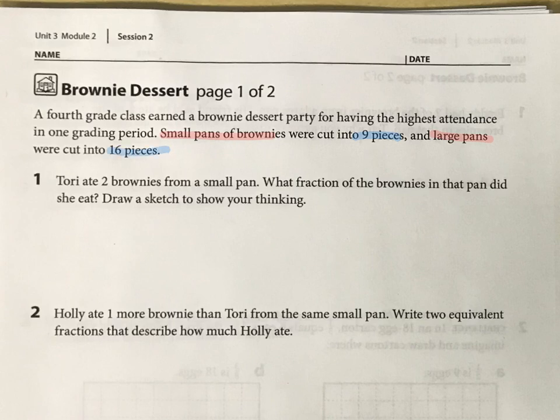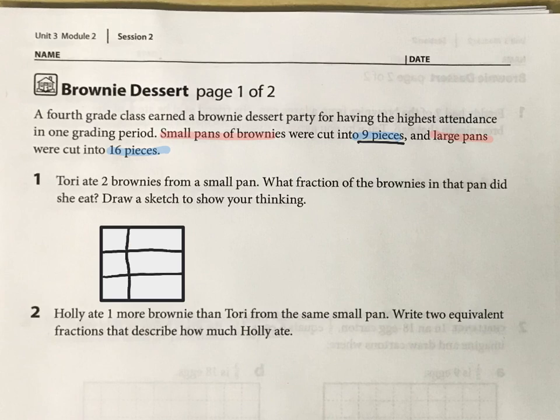So we're starting with Tori and she's getting this from the small pan. Squares are going to work best for this. We have nine pieces, right? Rectangles could work too, but basically the way to do ninths is you do thirds that way and then do thirds this way, and then you have ninths. And Tori had two brownies.